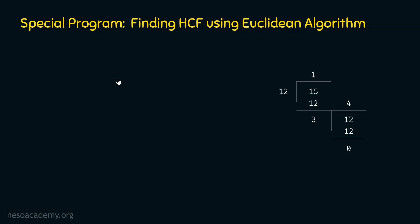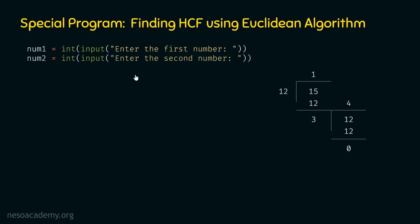First, we need to ask the user to enter two numbers. We use the input method with the prompt 'enter the first number' and store the result in num1. Then we ask for the second number and store it in num2. We want to divide num1 by num2, so num1 must always be the greater number. If the user enters 12 as num1 and 15 as num2, that's the scenario we need to handle.